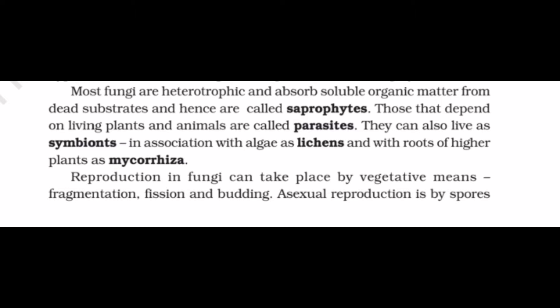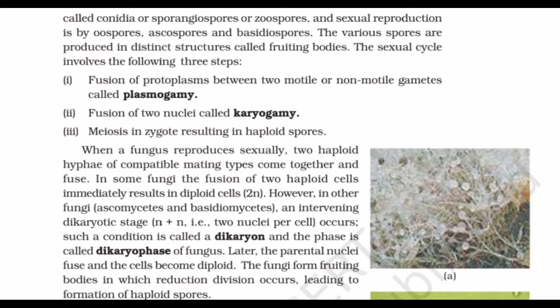Reproduction in fungi can take place by vegetative means: fragmentation, fission, and budding. Asexual reproduction is by spores called conidia, sporangiospores, or zoospores. Sexual reproduction is by oospores, ascospores, and basidiospores. The various spores are produced in distinct structures called fruiting bodies.